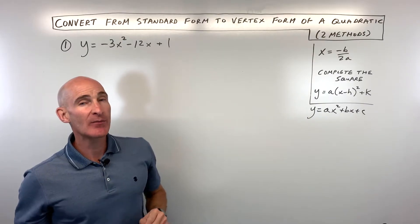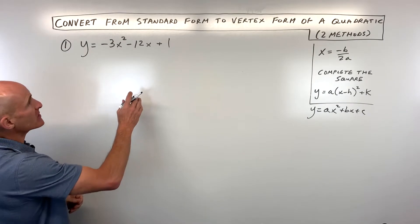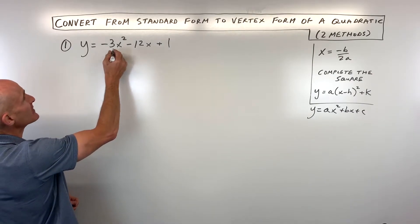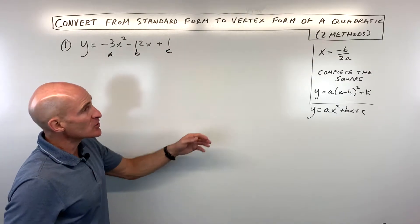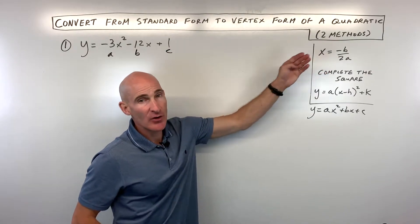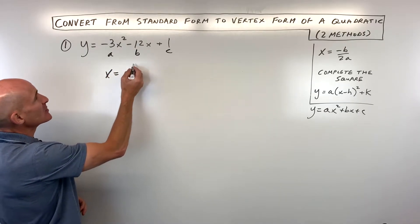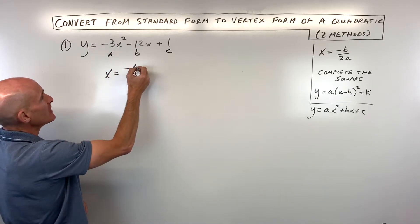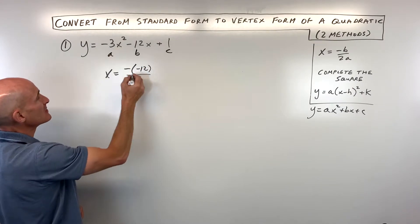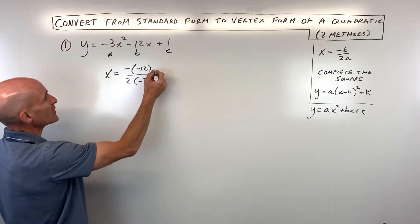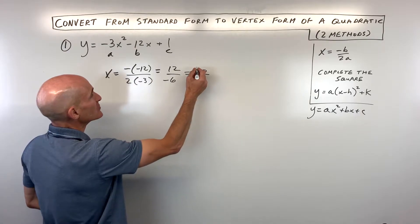We're going to go through two examples. I'll do the first one — see if you can do the second one. So the first thing we notice is that our a is negative 3, our b is negative 12, and our c is equal to 1. Using the negative b over 2a formula: that's negative times negative 12 over 2 times negative 3, which comes out to 12 over negative 6, equal to negative 2.